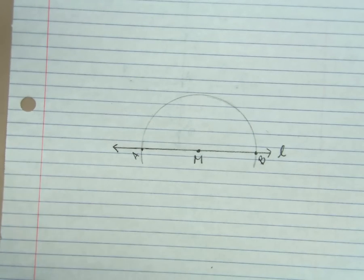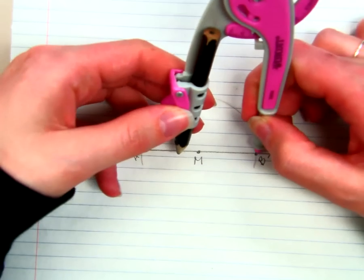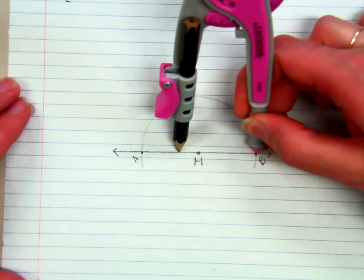So now I'm just going to draw a perpendicular bisector through that point M. So I need my compass to be greater than halfway through.